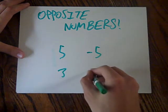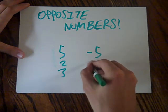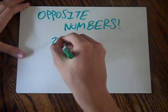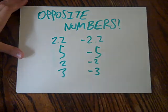You've got 3 and negative 3. You've got 2 and negative 2. You've got 2.2 and negative 2.2. That's just how it works.